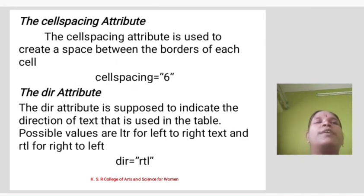The cell spacing attribute is used to create space between the borders of each cell. Example: cell spacing equals 6. The dir attribute is supposed to indicate the direction of text that is used in the table. Possible values are ltr for left to right text, and rtl for right to left. Example: dir equals rtl.